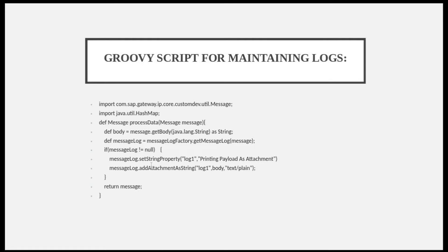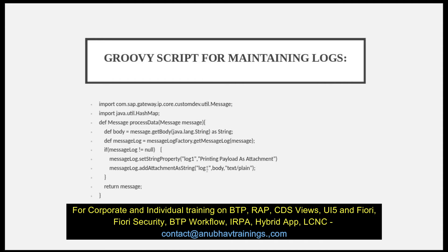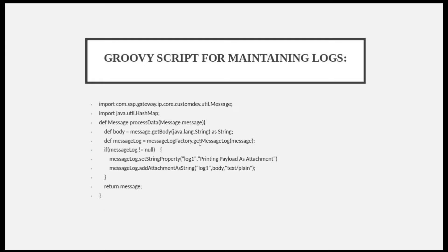If the message log is not equal to null, you set a string property and print the payload as an attachment. Basically you are fetching the payload under that log, and then adding whatever log is generated based on your payload as an attachment. So when you enable trace or go to monitoring, you will see the payload as an attachment on the processed message. Now I will show one more Groovy script example.